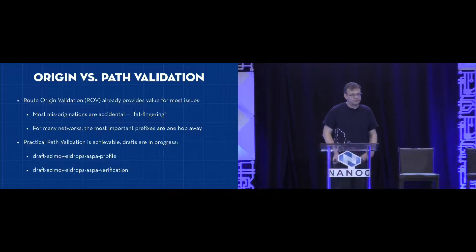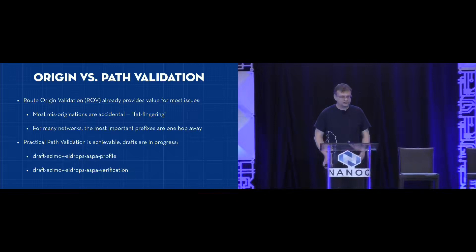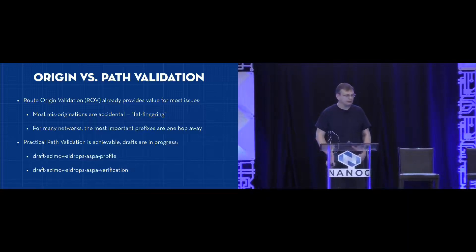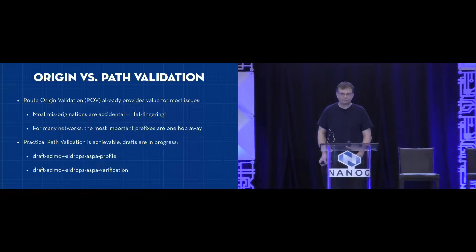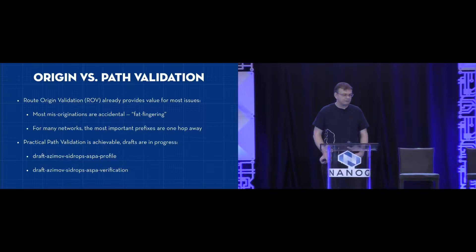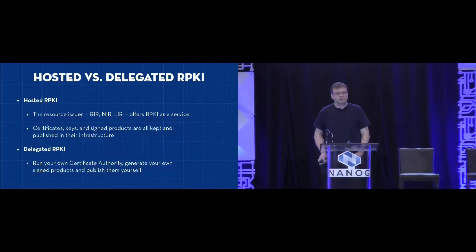An important point is that today we only do origin validation with RPKI, which means it only looks at where a certain announcement started, not the path of the announcement. For most route hijacks that happen, this is already good enough because most of them aren't adversarial — they're just someone making a mistake and typing the wrong number. That said, path validation is also possible with RPKI. There are currently two drafts in the SIDR Ops working group being adopted, so we may see more concrete work there during the course of this year.